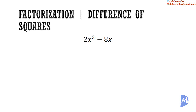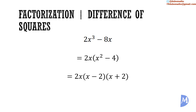And 2x cubed minus 8x: factorizing by HCF gives 2x, multiplied by x squared minus 4. Now x squared minus 4 is a difference of squares. So we get 2x, multiplied by x minus 2, multiplied by x plus 2.